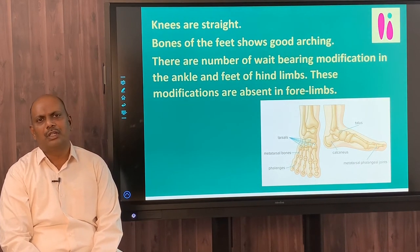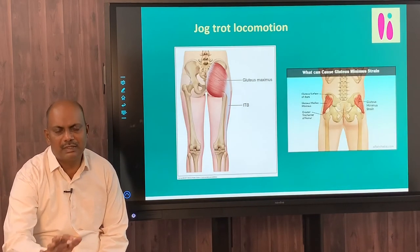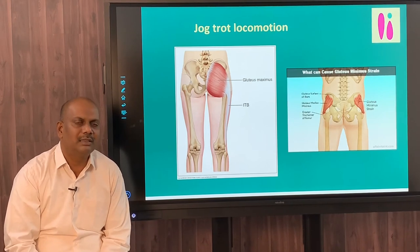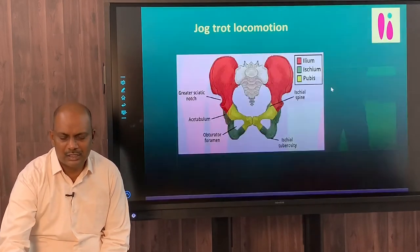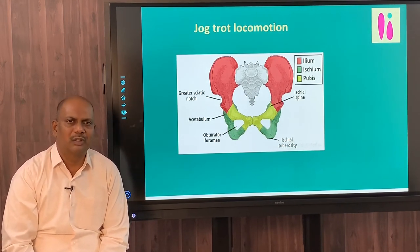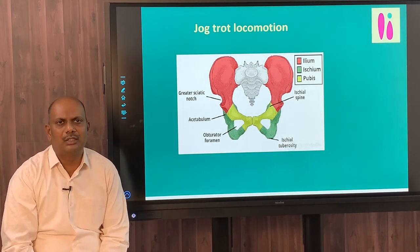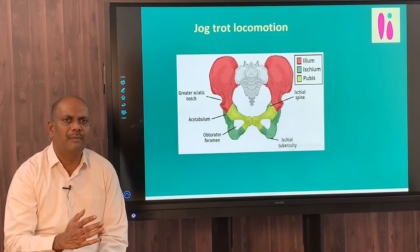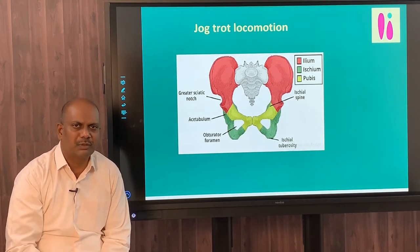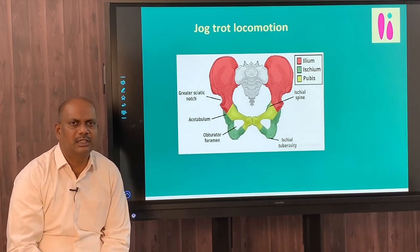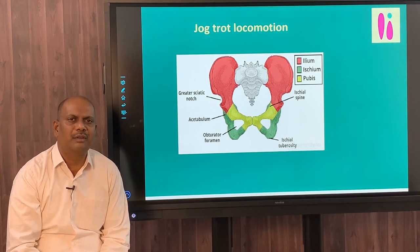Though Australopithecus had bipedal locomotion, it differed from human bipedalism. The gluteus medius and gluteus minimus muscles are absent, and the ischial tuberosity is long like quadrupedal animals. As a result, Australopithecus walked with bent knees and bent hips — a jog-trot locomotion — taking only 5 to 6 quick short steps before needing to stop and repeat. This jog-trot locomotion is not physiologically efficient and requires a large output of energy for walking.